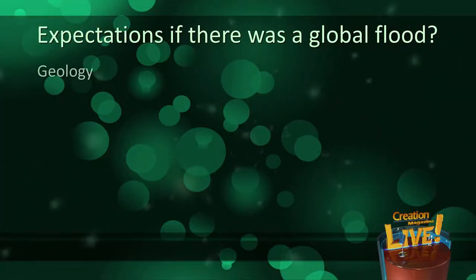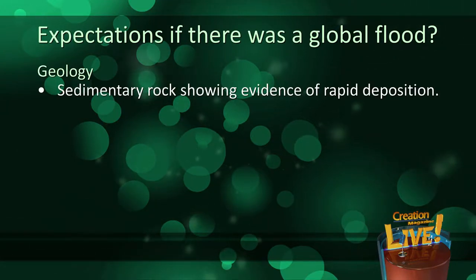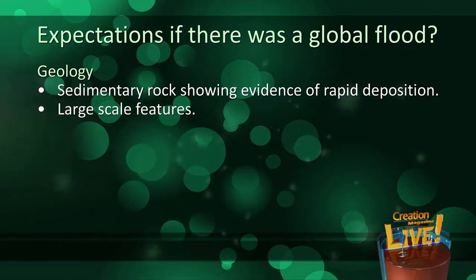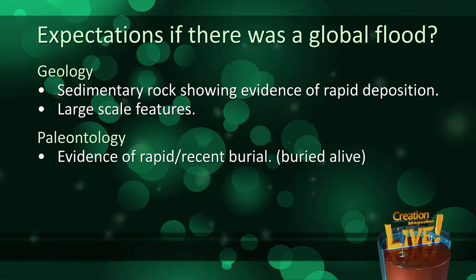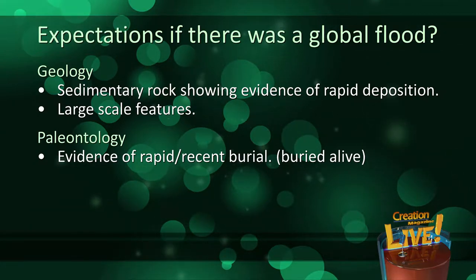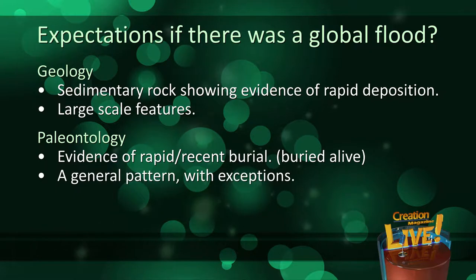What would we expect to find in these three areas if there was a global flood? In geology, we would expect to find sedimentary rock showing evidence of rapid deposition, and also large-scale, continent-wide geologic features. In paleontology, we would expect to find fossils showing evidence of rapid and recent burial, involving evidence that they were buried alive. We'd expect a general pattern to the fossil record matching different ecological areas, but with exceptions, since the flood was a catastrophic event.